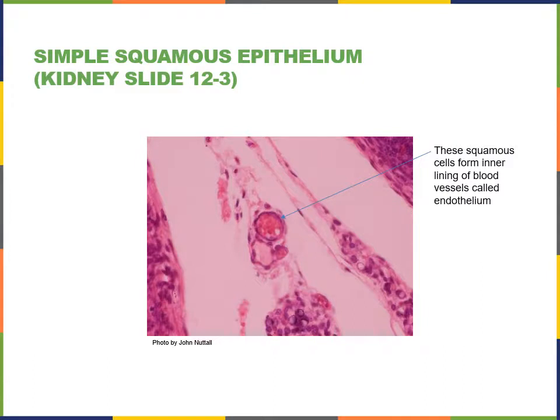Here's another example of a blood vessel with a simple squamous epithelium forming the inner lining, or endothelium. This image is taken from the kidney, where there are numerous blood vessels important for the function of the kidney to process blood through three mechanisms: filtration, secretion, and reabsorption. Reabsorption is moving chemicals from the filtrate back into the blood so that they're not lost in the urine, while secretion moves chemicals out into the filtrate to join what will become urine.